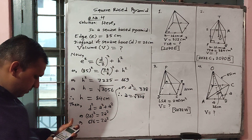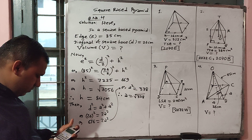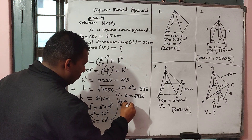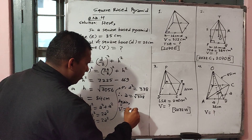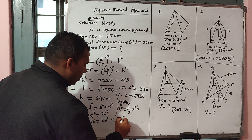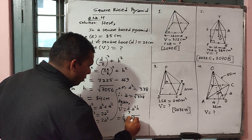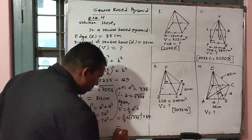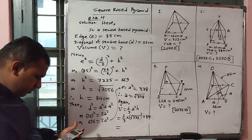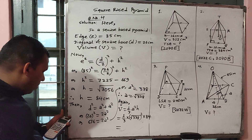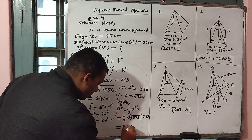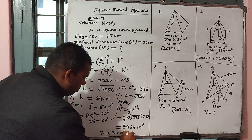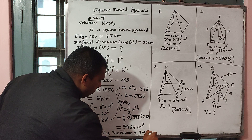After finding A, we can get the volume again. Volume V equals one-third times A squared times vertical height. That is one-third times 338 times 84, which becomes 9464. Thus the volume is 9464 cm cubed.